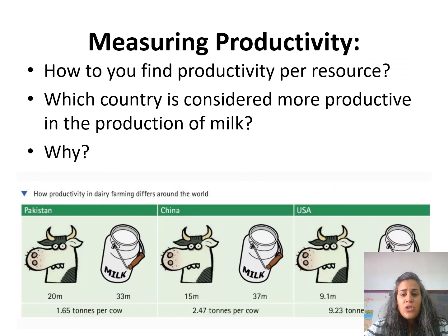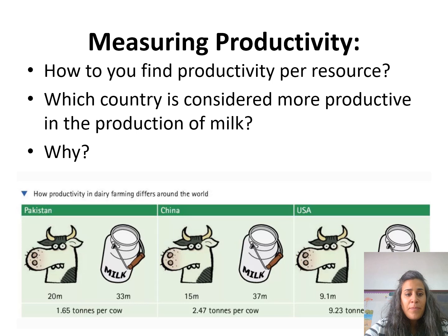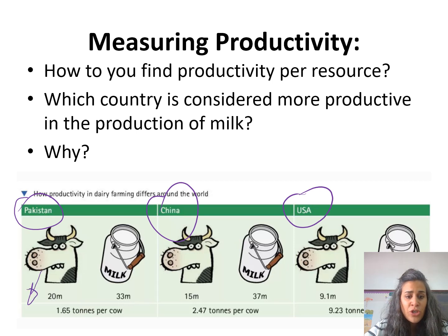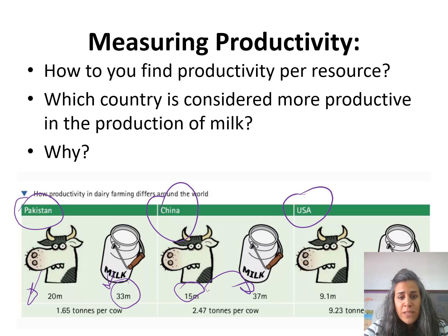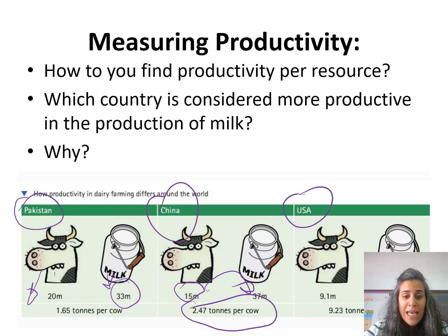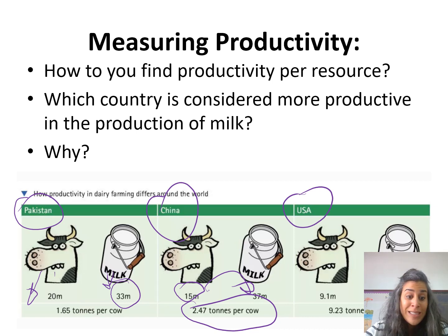How can we measure productivity? Looking at three different countries comparing cows and milk production: one uses 20 million cows to produce 33 million tons of milk, another uses 15 million cows to produce 37 million tons. China is more productive than Pakistan because on average 2.47 tons of milk are produced per cow in China, whereas Pakistan produces only 1.65 tons per cow.